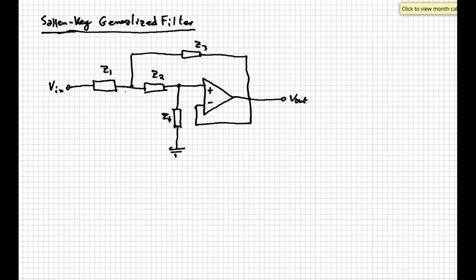Let's then take the node where impedances Z1, Z2 and Z3 converge, and let's call the voltage at that node Vx. Also, since the op-amp is in a voltage follower configuration, we can also state that the voltage at the non-inverting input is the same as the output voltage, and that's because the voltage between non-inverting and inverting inputs of the op-amp must be zero.